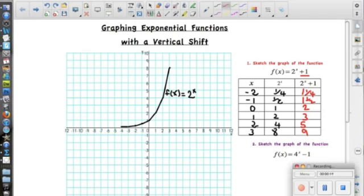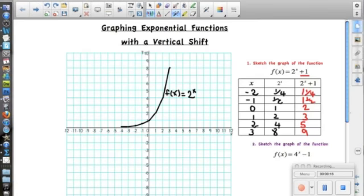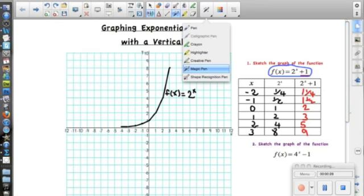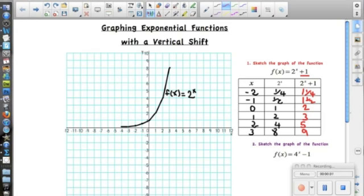So now we're going to be plotting the graph for y equals, or f of x equals, 2 to the x plus 1. Okay, so our first point is x is negative 2, so negative 2, and f of x is 1 and 1 fourth, so around here. Then we have negative 1, and y, or f of x, is 1 and a half, so around here. And 0 with 2, which is about here.